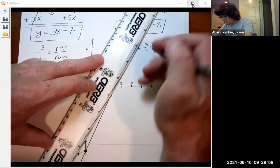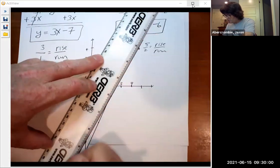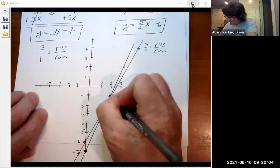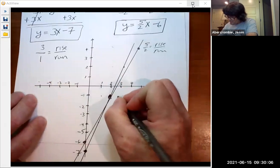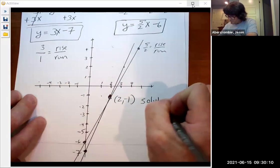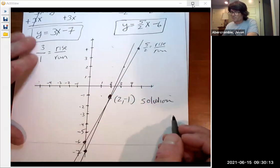The hardest thing about graphing, solving by graphing, is just getting a good picture. So hopefully you can see here, this point right here is 2, -1. And that is my solution, because that's where these guys cross each other.